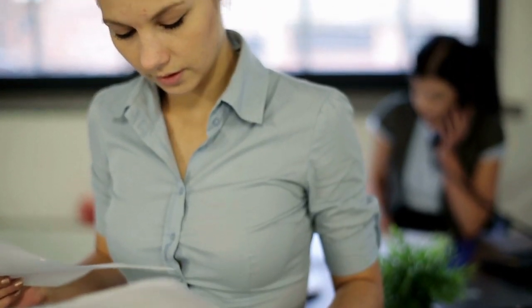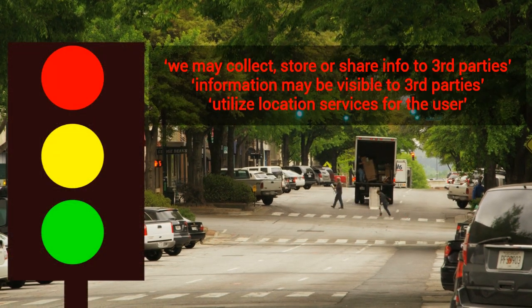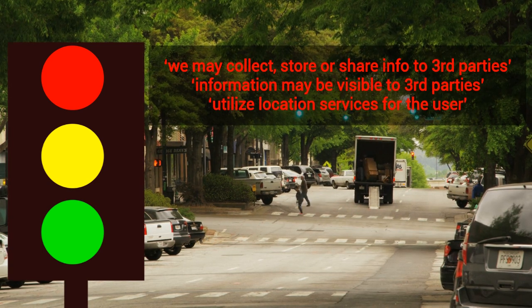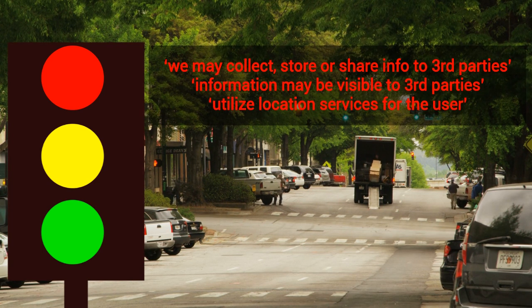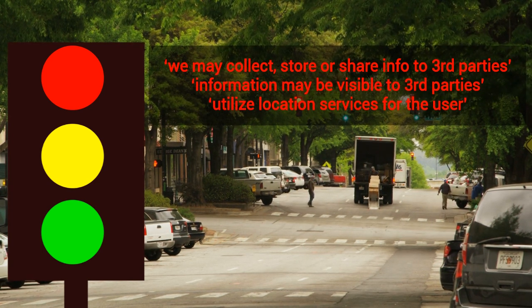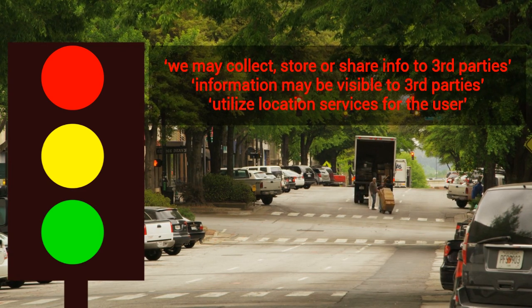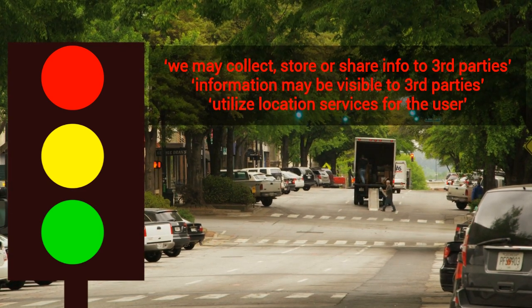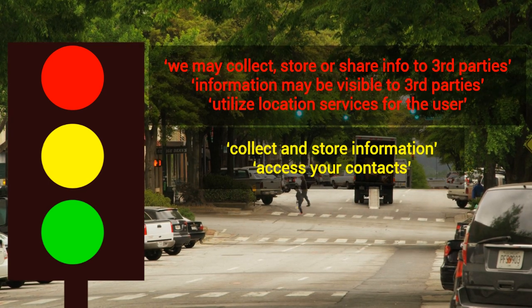So what should you look for in these policies? Use the following advice to help determine if the resource is safe to use. There are some statements that may mean privacy is at risk, such as: we may collect, store, or share information to third parties; information may be visible to third parties; or utilizes location services for the user. There are also statements you should be cautious about and think twice before accepting, including that the tool may collect and store information or access your contacts.